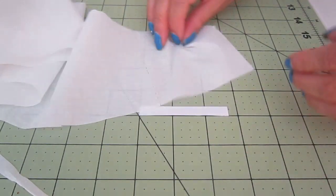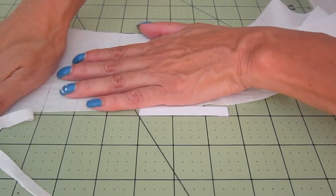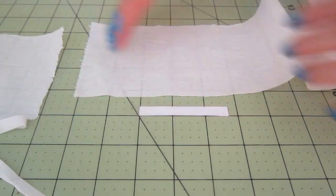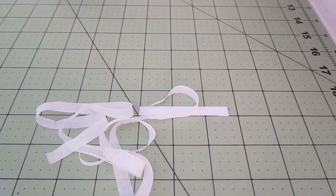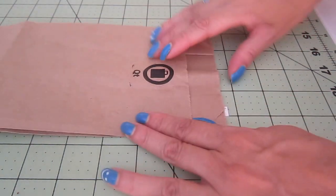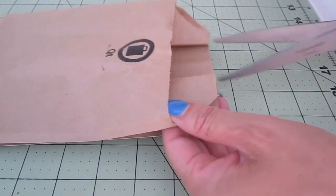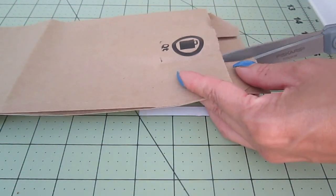Now we have our 8 squares. This is our toilet paper. And now we are going to cut a little piece of this brown paper bag. This is going to be for the center of the roll.